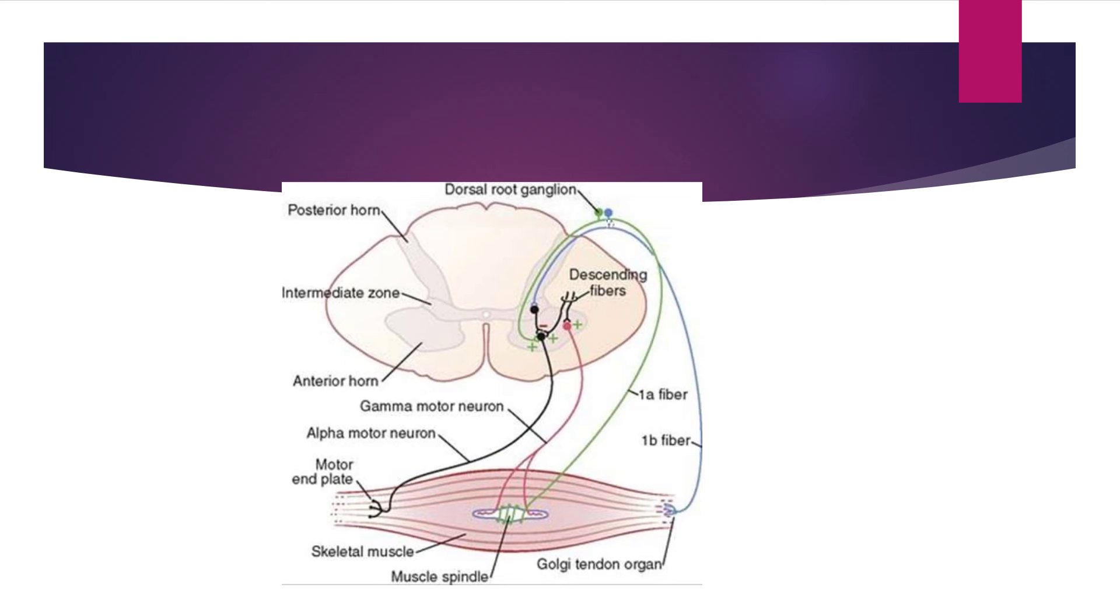So in summary, because of continuous discharge of gamma neurons to the muscle spindle, muscle spindle remains sensitive to contraction and stretch. And this is picked up by 1A fiber and the information sends to the spinal cord.